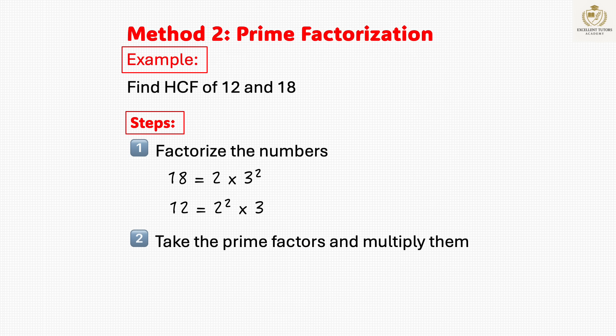Step 2: Take only the primes that appear in both numbers. The common factors are 2 and 3. Multiply them to get 6. So the HCF of 12 and 18 is 6.